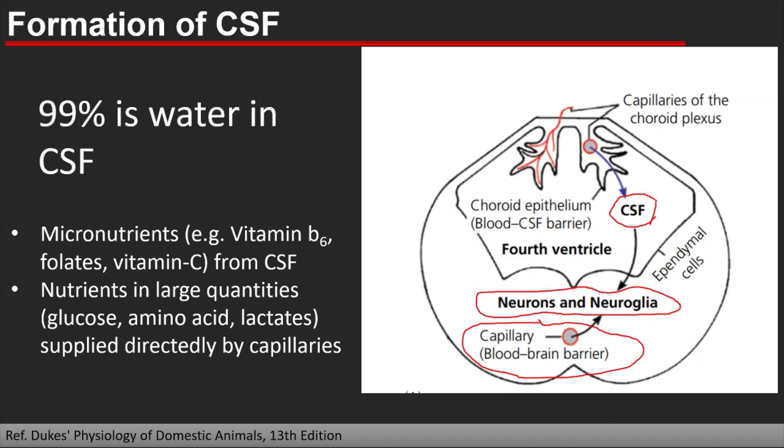CSF also plays an important role, not only supplying the requirements or nutrients to the neuron but also metabolic products of the neuron are taken up by the CSF. Analysis of CSF gives some indications regarding the neuron or disease conditions or infections. Thank you.